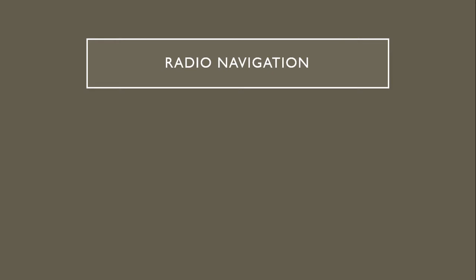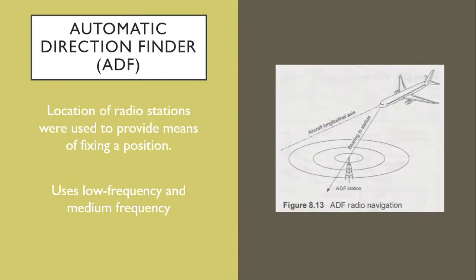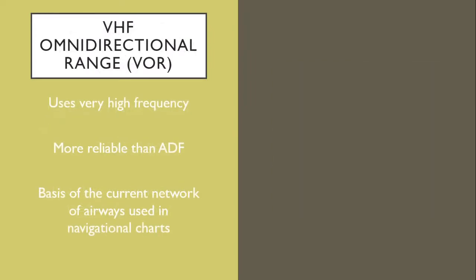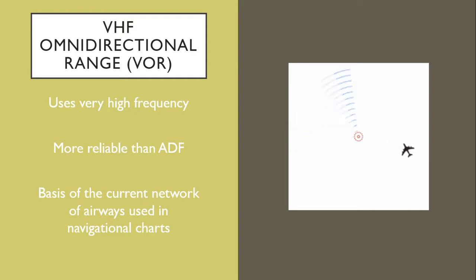The advancement in radio technology led to the birth of radio navigation. The Automatic Direction Finder used the location of radio stations to provide aviators with information about their position. It uses low and medium frequency. Very High Frequency Omnidirectional Range determines the direction of an aircraft with respect to the location of the radar. It uses very high frequency and is still considered to be the basis of the current network of airways in navigational charts.